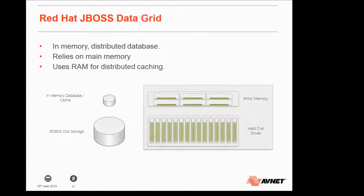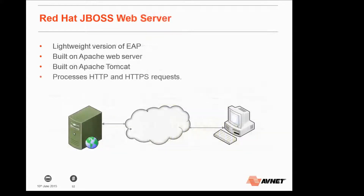Data Grid is an in-memory distributed database. It uses RAM in hardware and servers for distributed caching rather than having to rely on slow hard disk drives, taking advantage of the inherent performance benefits within RAM. Red Hat JBoss Web Server is a lightweight version of EAP, built on Apache and Apache Tomcat, and it processes HTTP and HTTPS requests.